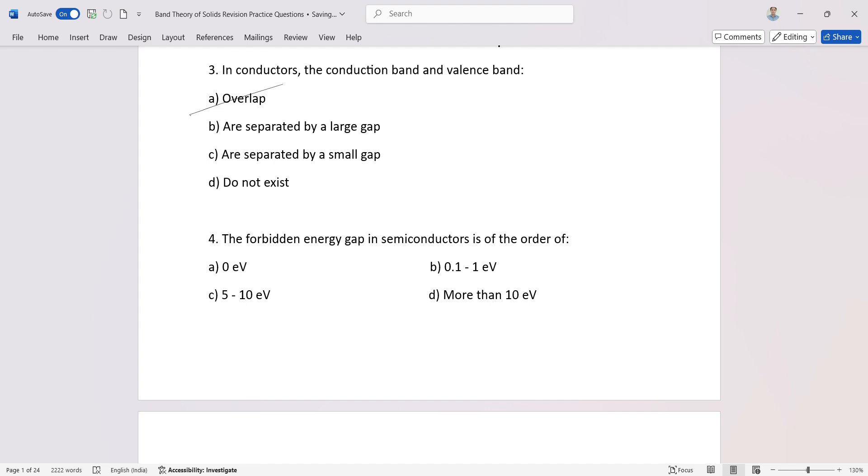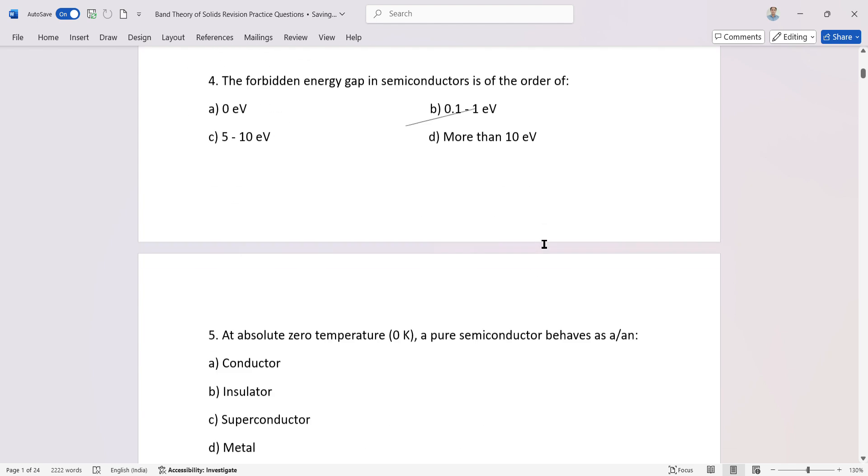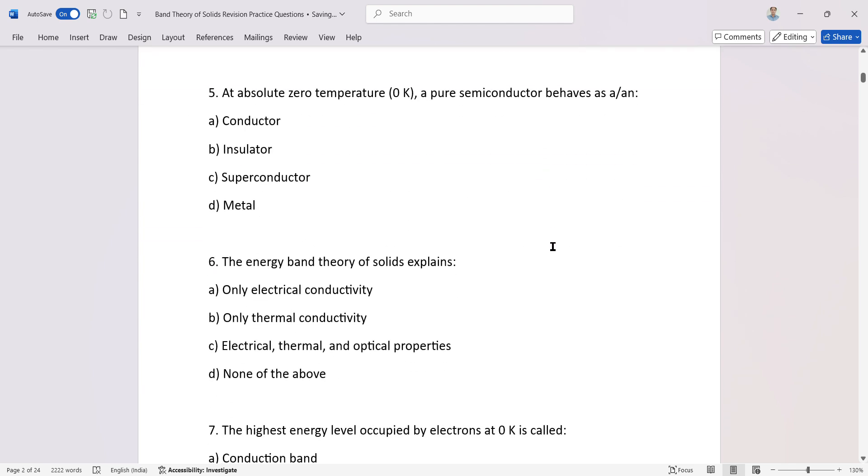The forbidden energy gap in semiconductor is of the order 0.1 to 1 electron volt. At absolute zero temperature, zero Kelvin, a semiconductor behaves as an insulator. The energy band theory of solids explains electrical, thermal, or optical properties.